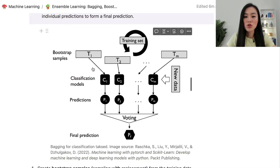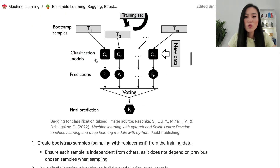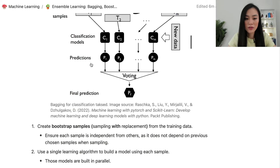We have m bootstrap samples from T1 to Tm. The reason we create bootstrap samples is to ensure each sample is independent from others, as it does not depend on previously chosen samples. Then we use a single learning algorithm to build a model using each bootstrap sample. These models can be built in parallel — we have C1, C2 to Cm, m classification models in total.